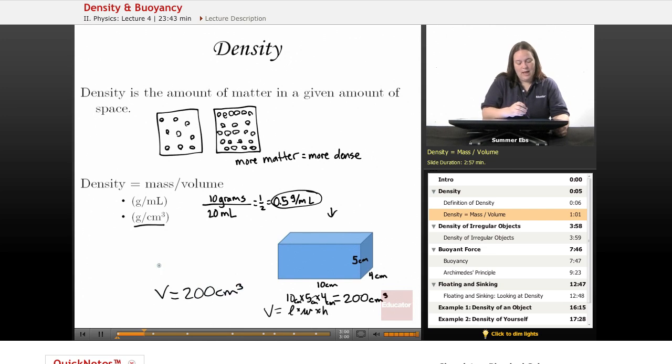And the mass of that cube is going to be 400 grams. To find the density, mass divided by volume, 400 divided by 200.